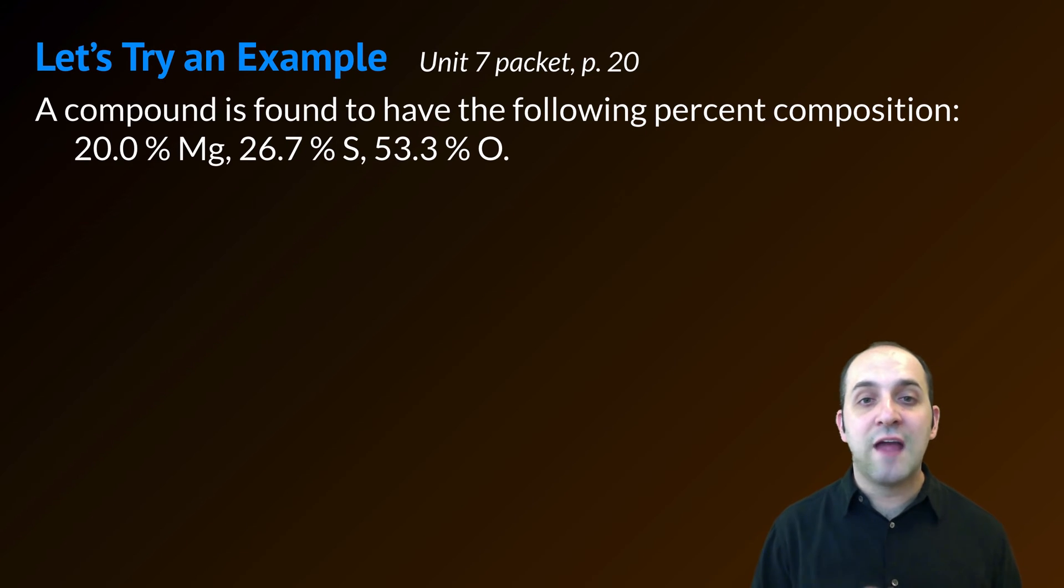A compound is found to have the following percent composition: 20.0% magnesium, 26.7% sulfur, and 53.3% oxygen. Can we figure out its empirical formula? Pause the video and try it on your own, and then when you're ready, we'll go through it together.